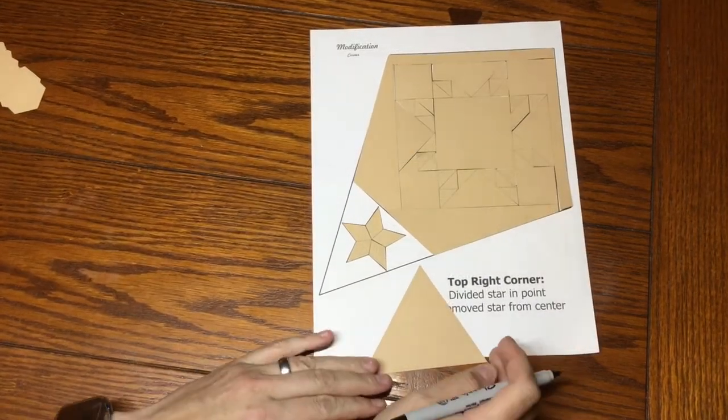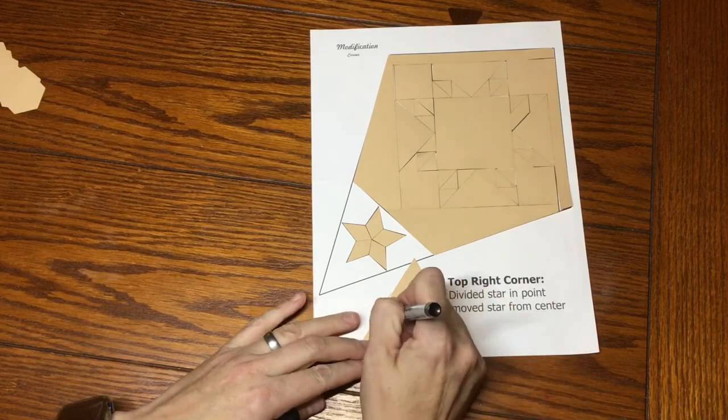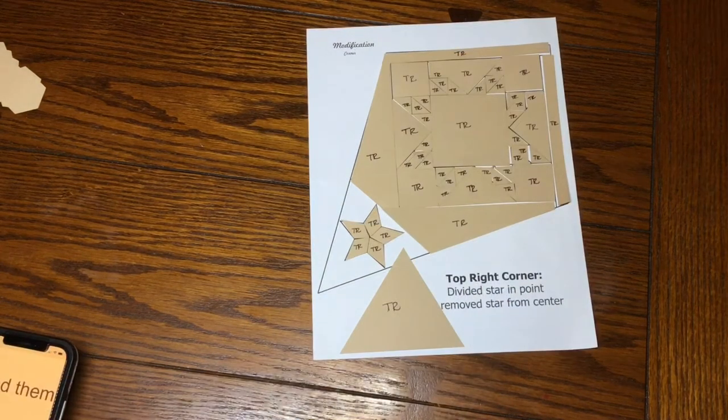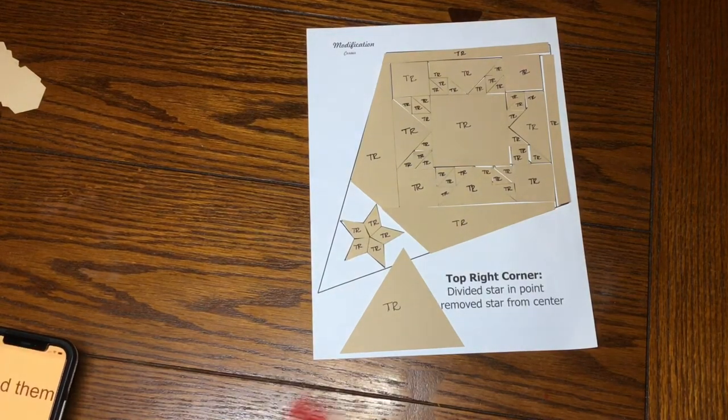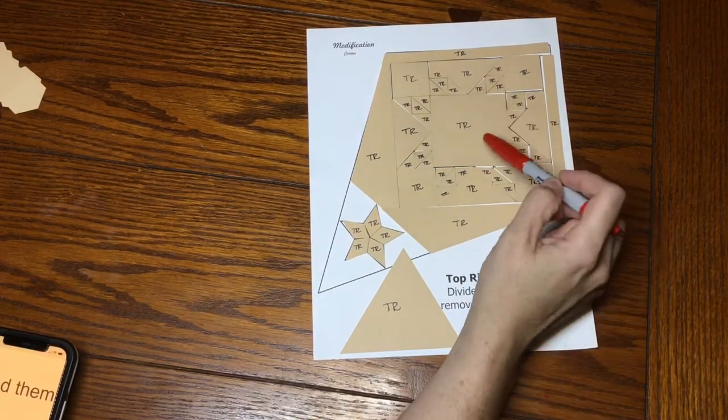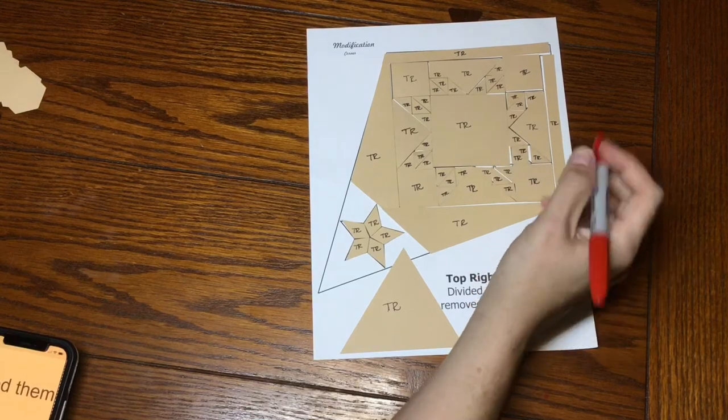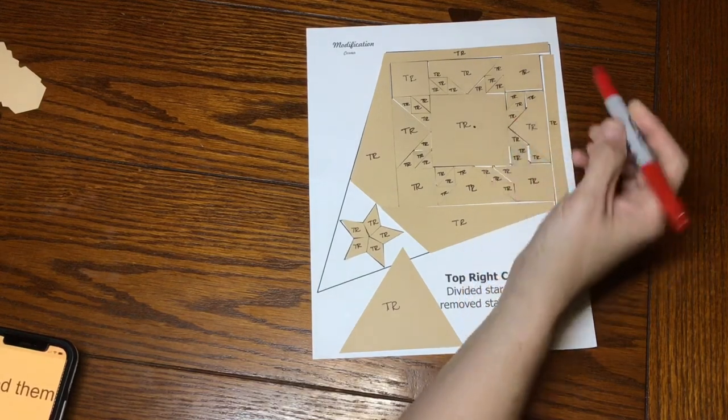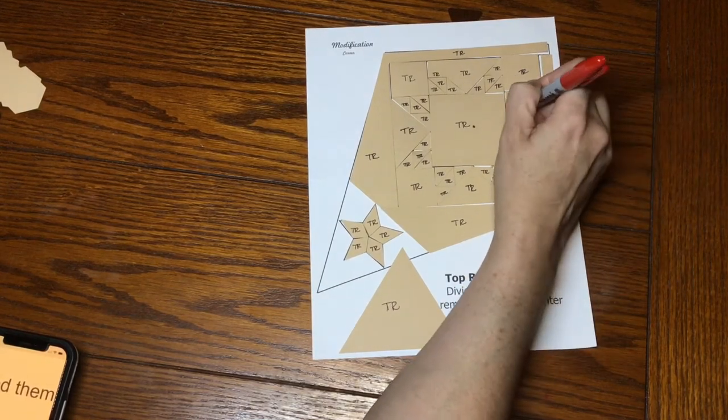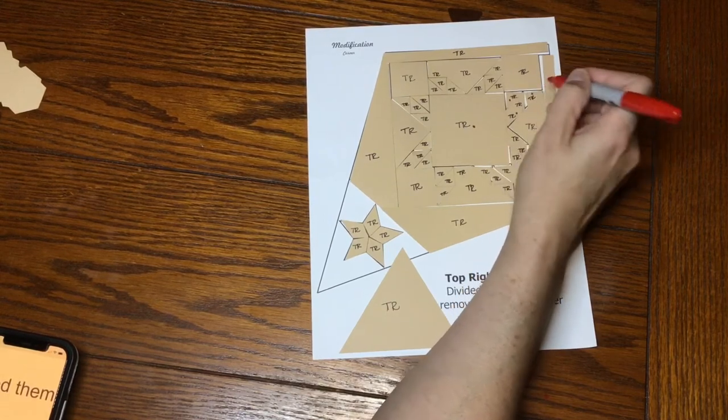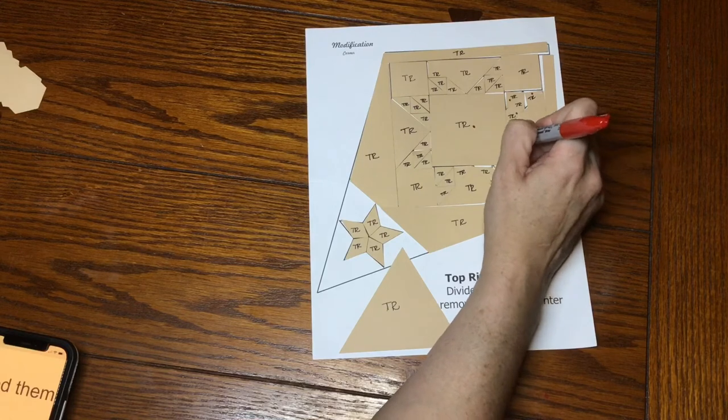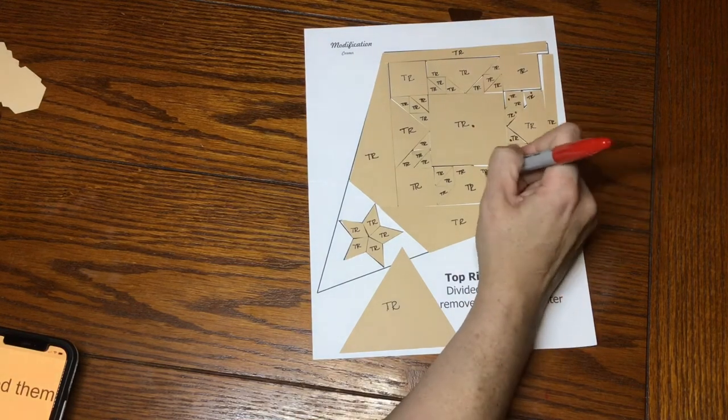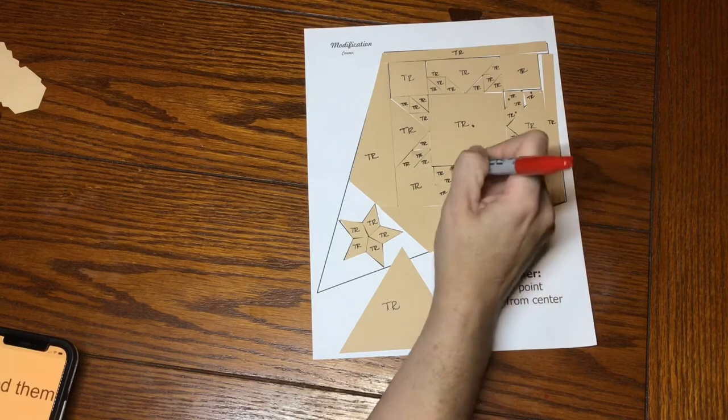So I got all of my pieces laid out, and now I'm going to label these. So I have my pieces laid out. Now it's time to mark for focus fabric. You can either have this be background or focus fabric. I'm going to use it as focus fabric. And then have the inner part of these triangle pieces be background.